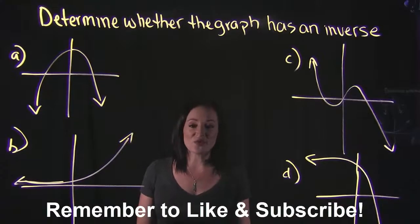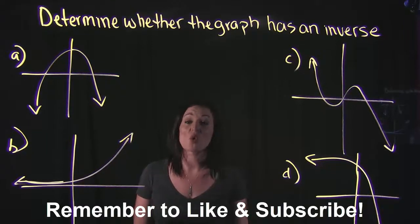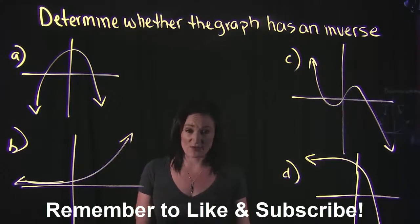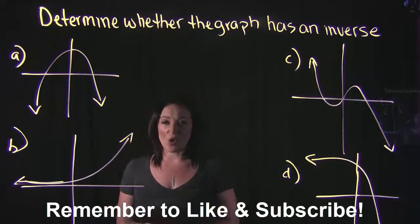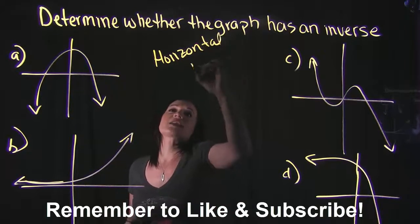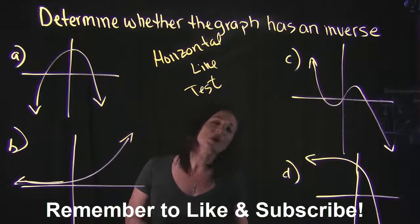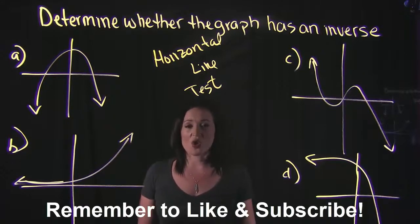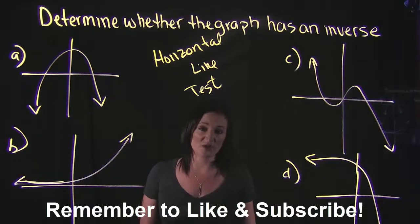This video focuses on how to determine whether a graph has an inverse function. For this example, you're given a graph and asked if it has an inverse. The way we tell is by using what's called the horizontal line test. If you can draw a horizontal line anywhere on your graph and it only crosses at one point, then yes, it has an inverse. If it crosses more than one point, then no, it does not have an inverse.